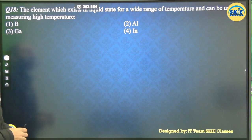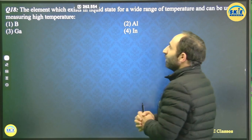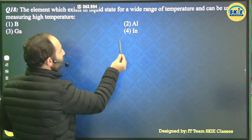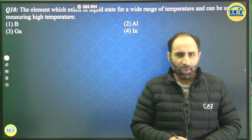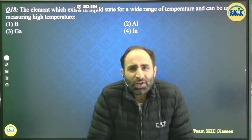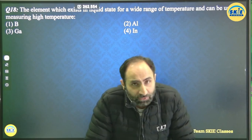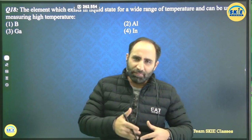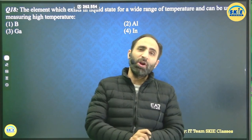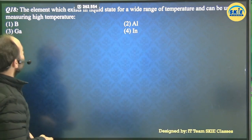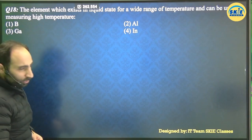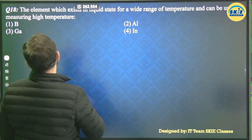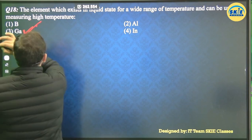Question 18: which group 13 element exists in liquid state over a wide temperature range and can be used for measuring high temperatures? Among boron, aluminium, gallium, and indium — gallium has a very low melting point (30°C / 303 K), so it can exist as liquid even in summer. However, its boiling point is very high. This wide liquid range makes gallium suitable for measuring high temperatures. Gallium is the answer.